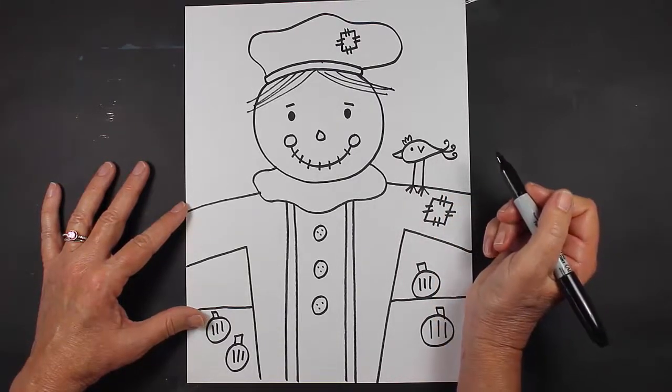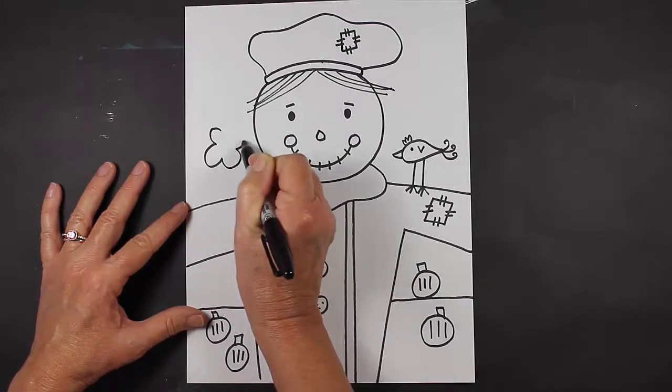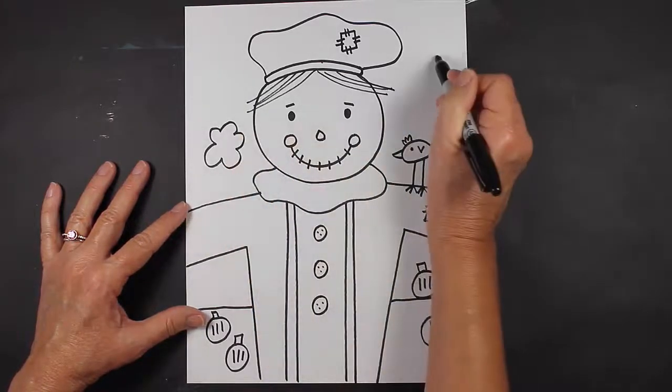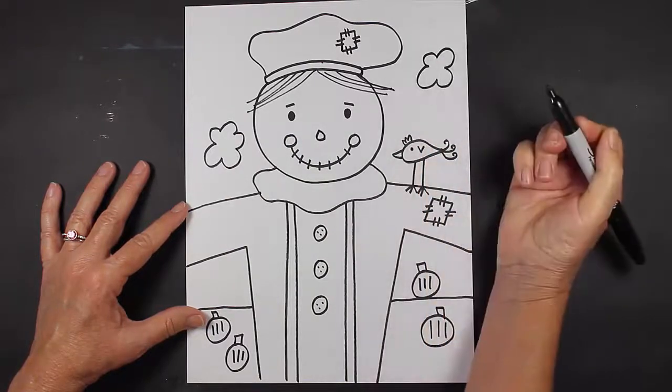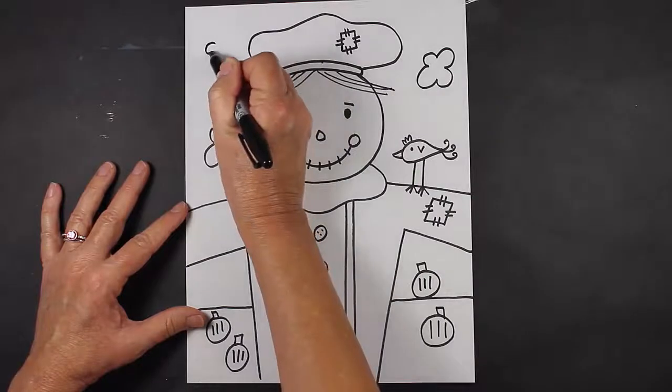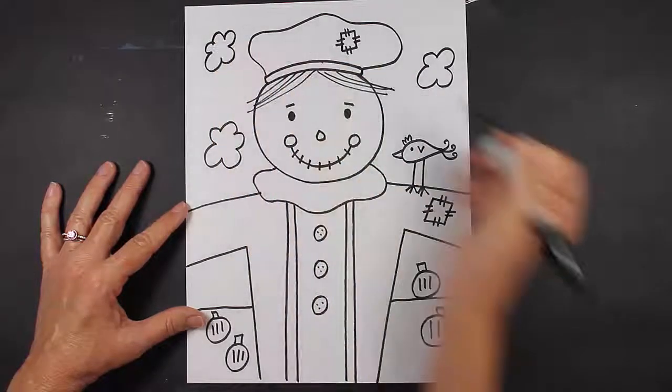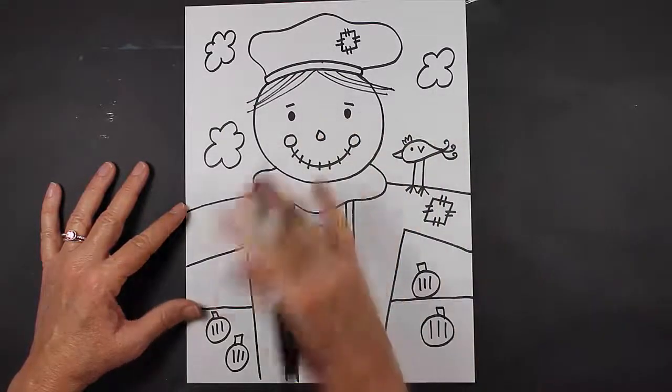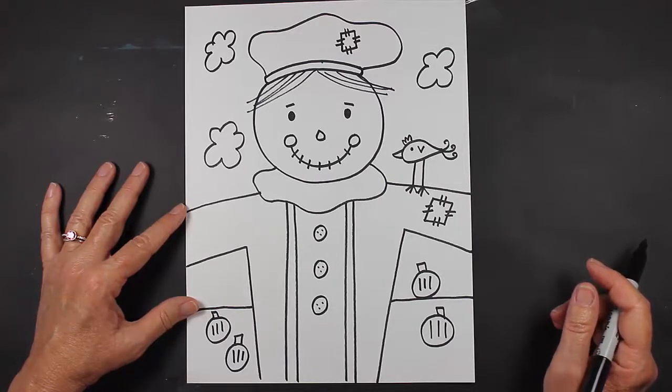For the background, I think I'll put a few clouds in the sky behind him, maybe one more small one up here. When I'm drawing like this, I like to use all of my space. Now take a look at your drawing and see if there's anything else that you'd like to add on your scarecrow.